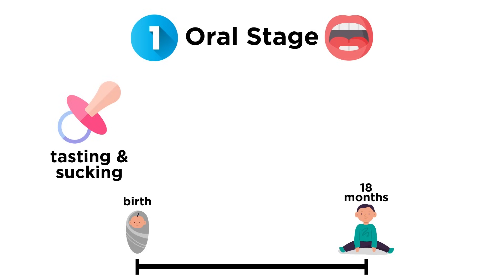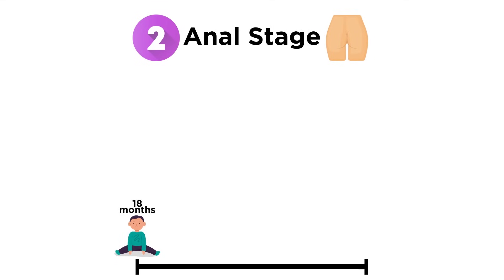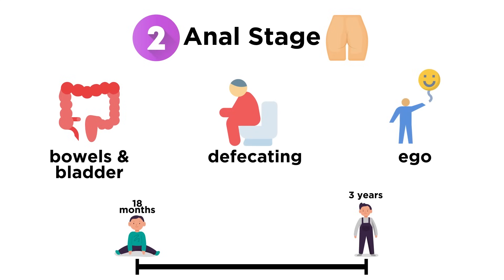A person who is fixated or stuck in the oral stage may develop habits like thumb sucking and overeating. The oral stage is followed by the anal stage, which lasts until one reaches three years old. Instead of the mouth, the child's pleasure-seeking centers are the bowels and bladder. Children in the anal stage get pleasure from defecating. The anal stage is also where the ego is supposed to develop. At this stage, a child understands that they are their own person and that their desires could put them in conflict with society's demands.